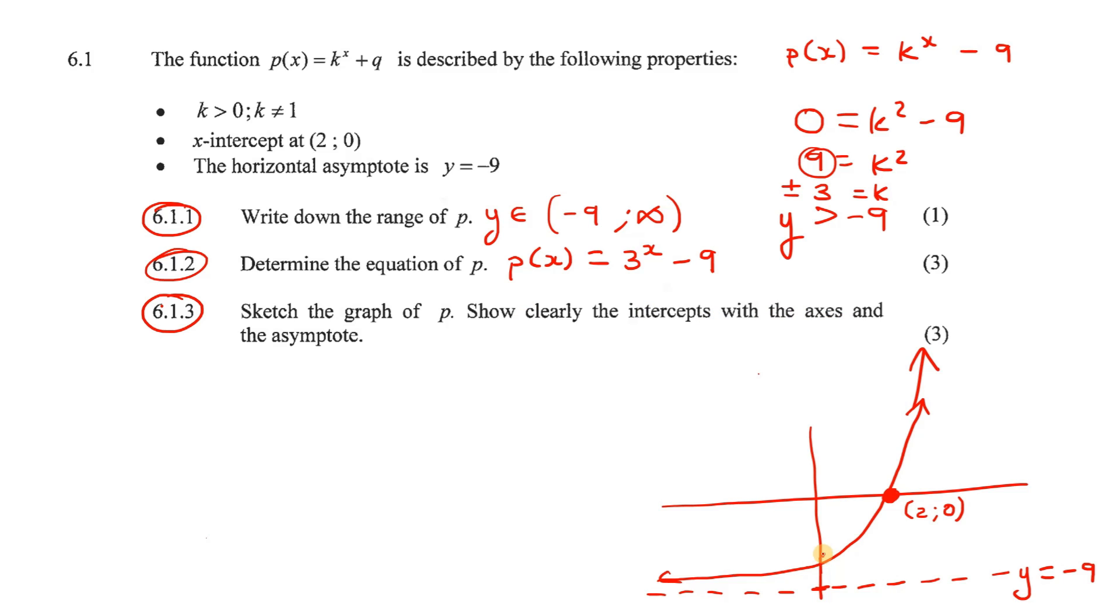So to find the y-intercept, what do we do? You make x 0. So you take the original equation, which is 3^x minus 9. And you make x 0 like that. And so that will end up giving you... This actually gives you a 1. And then that will give you 1 minus 9, which is minus 8. So that means the x is 0 and the y is minus 8.